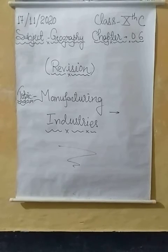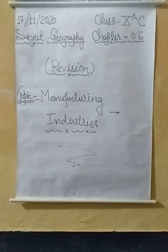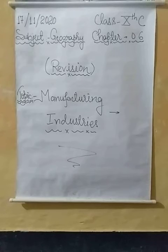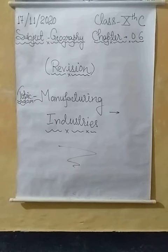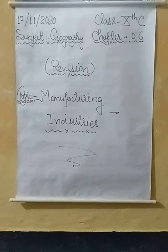Next is the sugar industry. India stands second as a world producer of sugar and occupies the first place in the production of gur and khandsari. According to 2010-11 data, there were over 662 sugar mills in India, located in Uttar Pradesh, Bihar, Maharashtra, Karnataka, Tamil Nadu, Andhra Pradesh, Gujarat, Punjab, Haryana, and Madhya Pradesh.